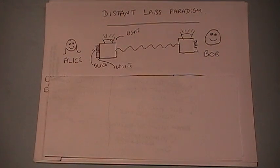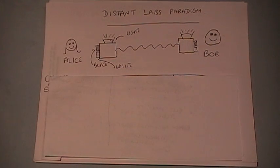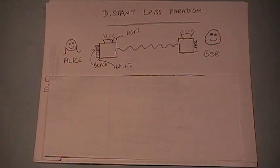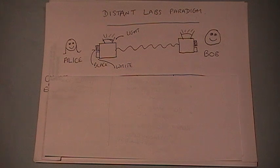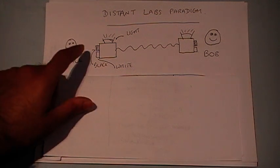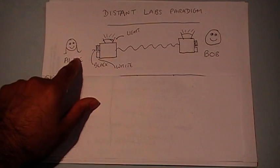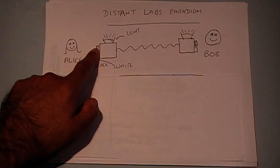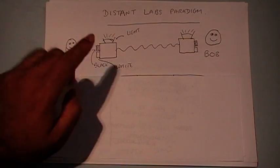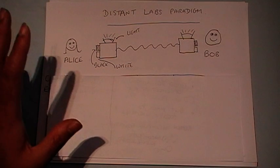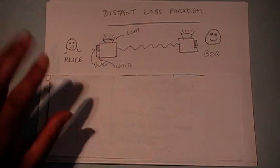They want to come up with a theory that describes how the response of the box — in terms of the light flashing or not flashing — is related to the choices of button that they press. For simplicity, in each experiment Alice will either choose to press the black button or the white button, but not both at the same time.